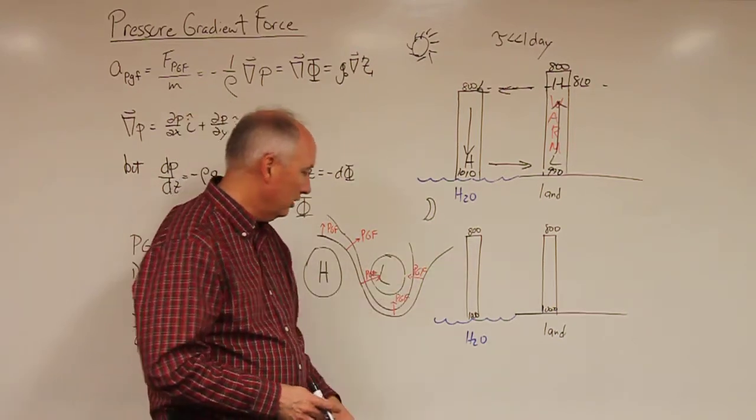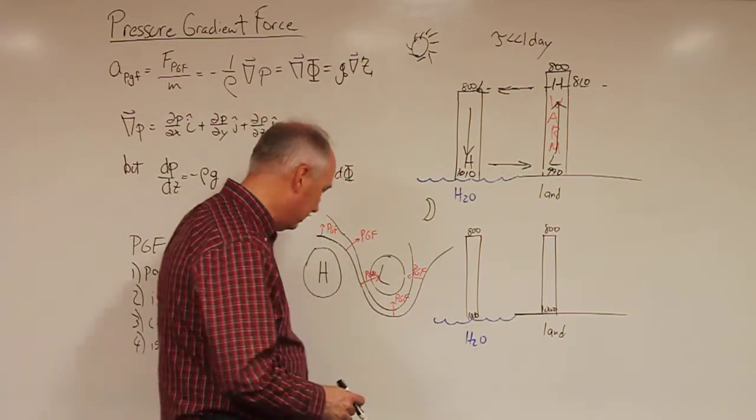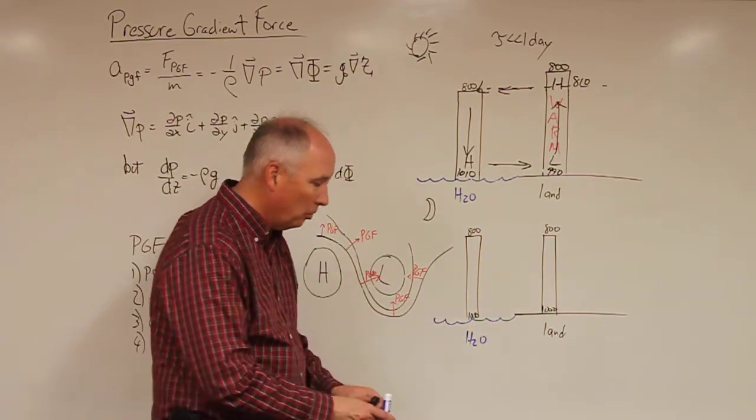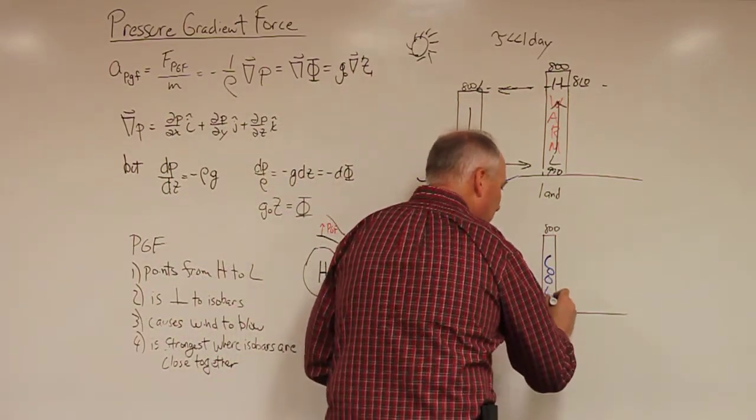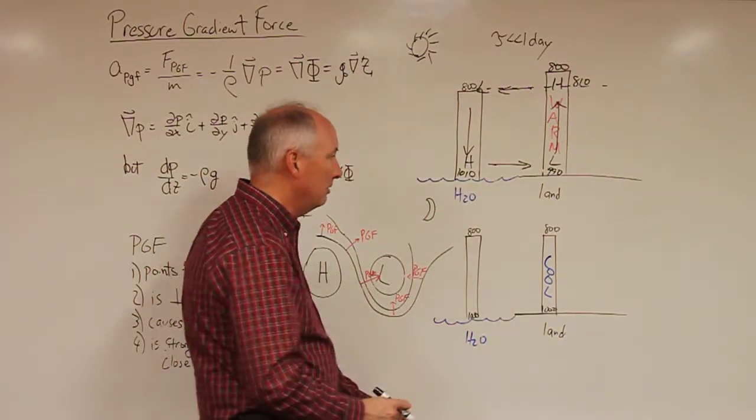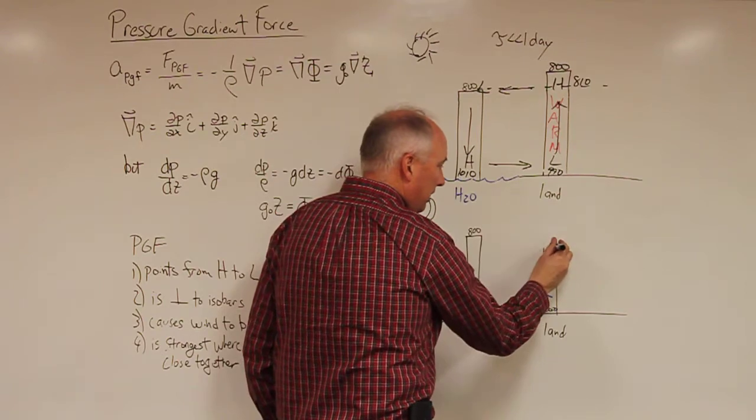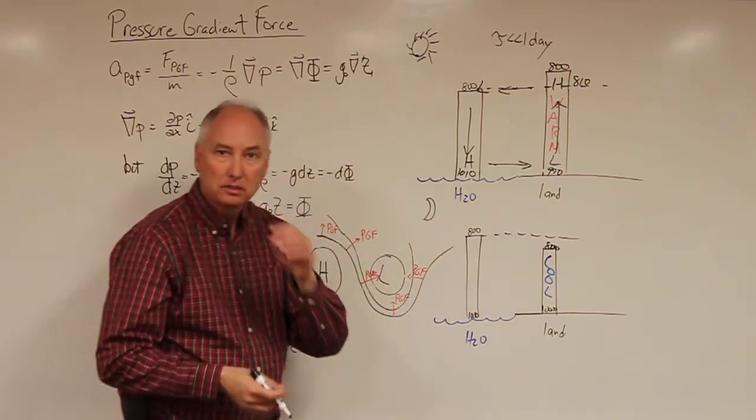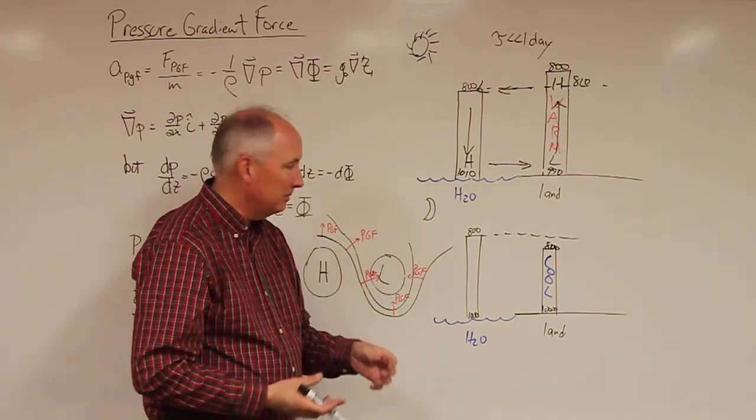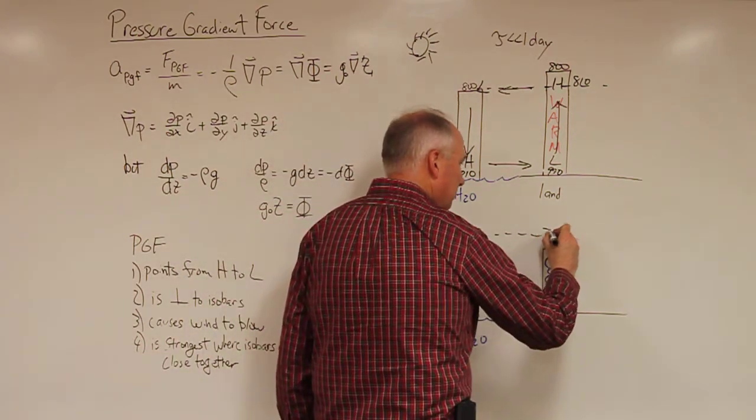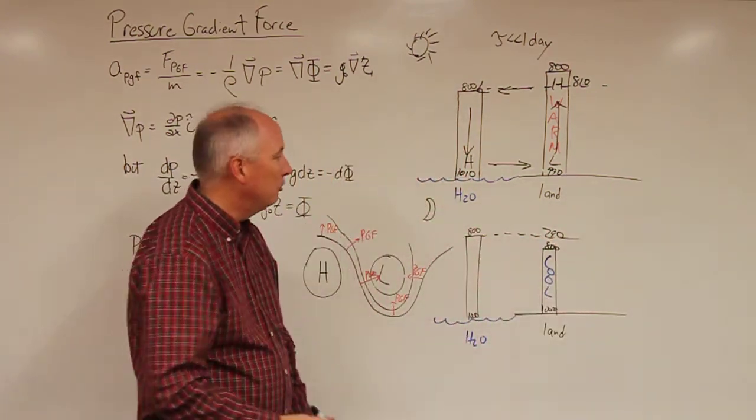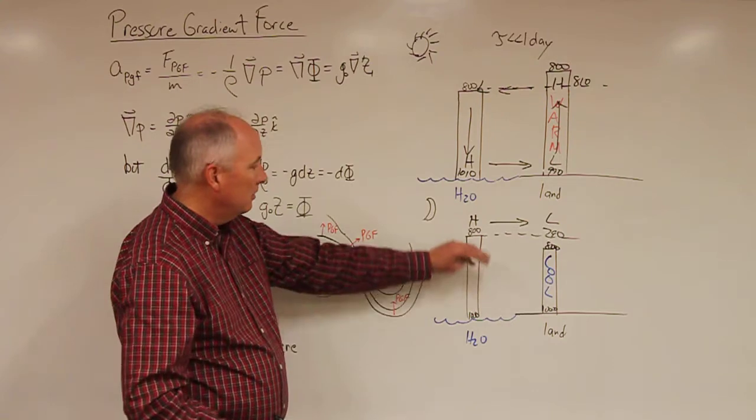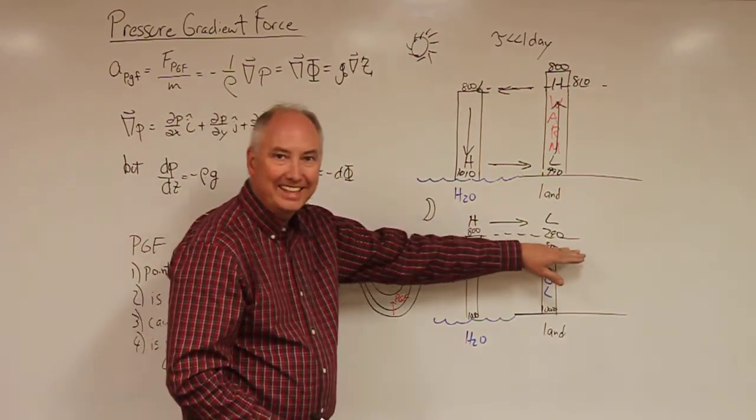At night time, you'll have a very different opposite impact. So at night time, the land is going to cool faster than the water, which is going to cool this air mass, or this column there, which is going to cause the column to contract or to decompress. And now, at this level, you have a lower pressure than you had before. So now you have high pressure on this side, low pressure on this side, with the flow from this column to that column.